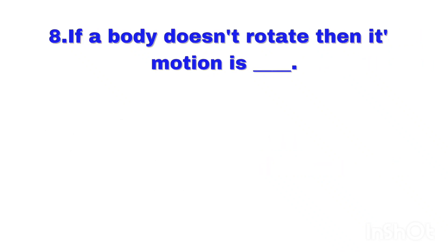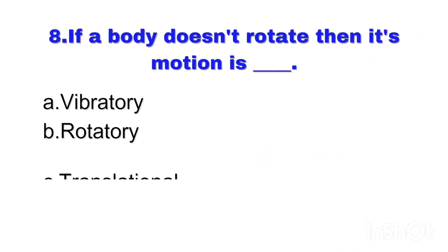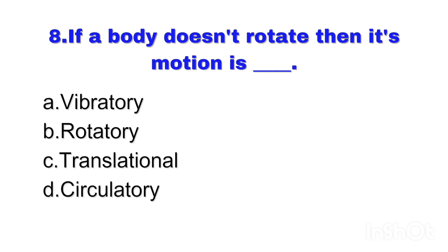Question number 8. If a body does not rotate, then its motion is dash. Right answer: Option C — Translational.